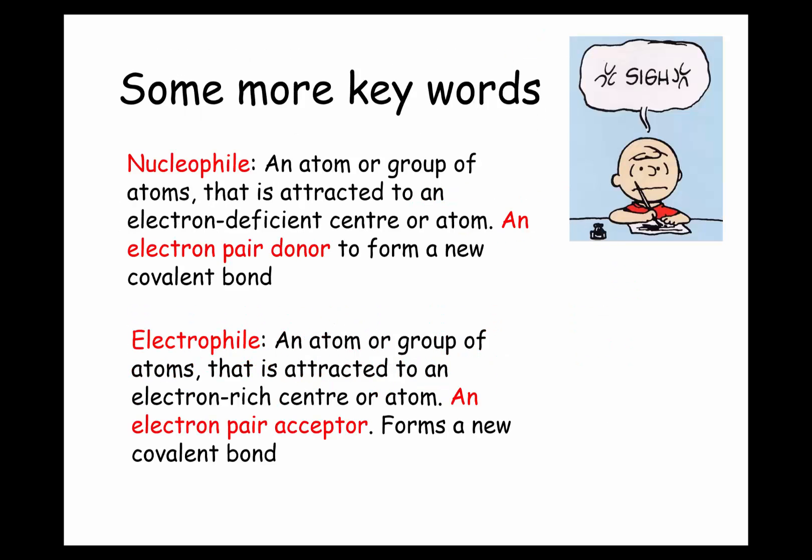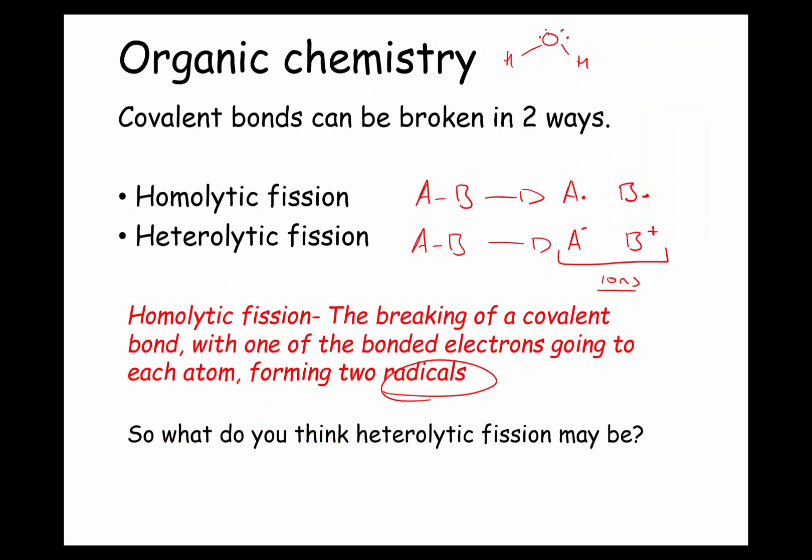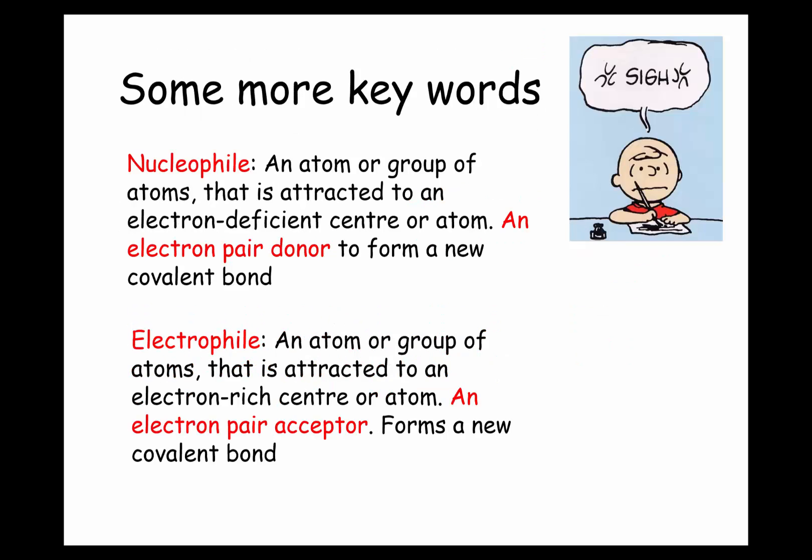So homolytic fission produces radicals, and heterolytic fission produces ions — it's the breaking of a covalent bond with both bonded electrons going to one atom forming ions rather than radicals. You need to know the definitions for both homolytic and heterolytic fission. Now let's define some key terms. A nucleophile is simply an atom or a group of atoms that is attracted to an electron-deficient centre — an electron pair donor — to form a new covalent bond.